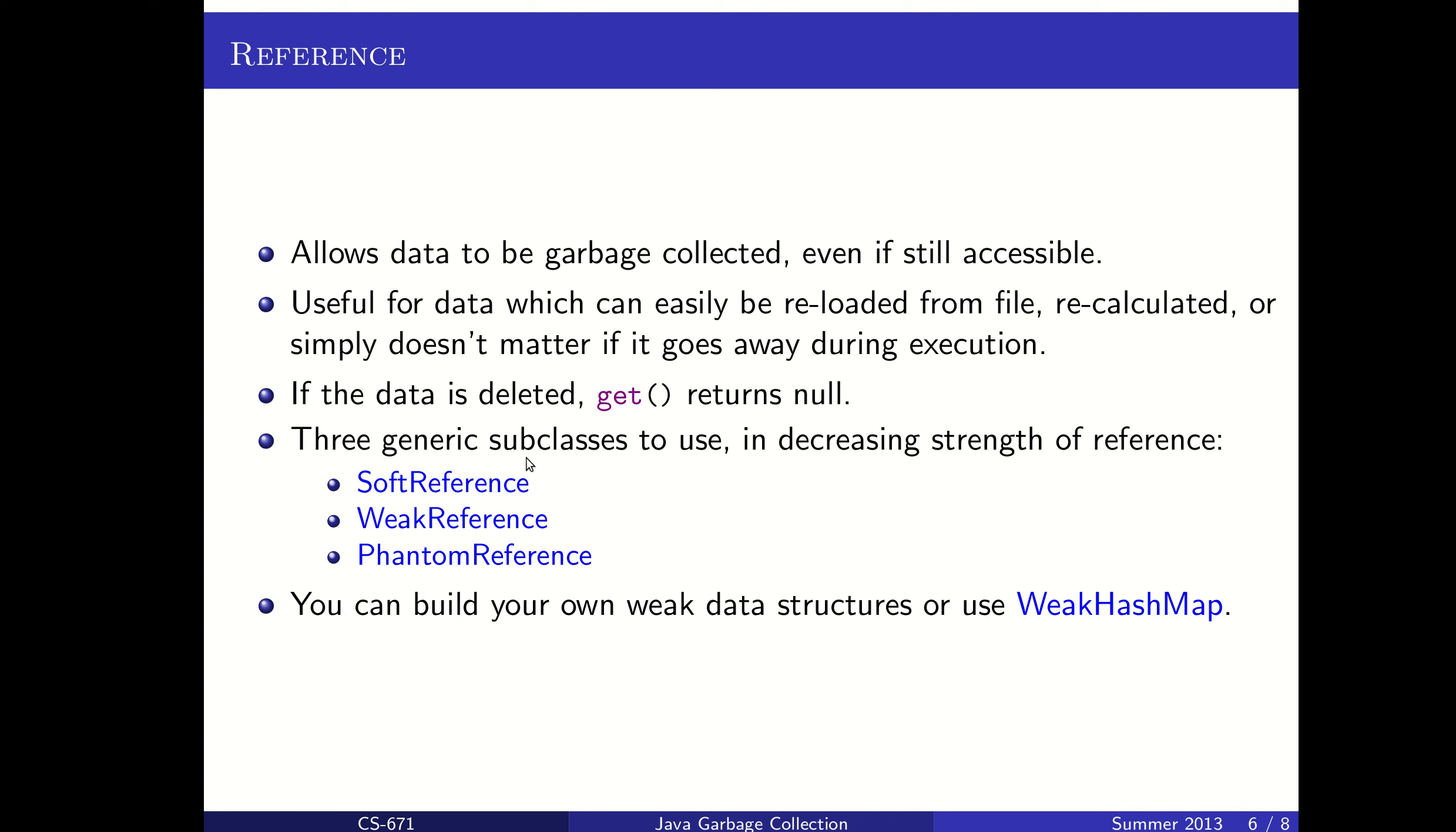There are three generic subclasses that you can use. They are in decreasing strength of reference. I will not get into the exact details of how those are prioritized and things like that but there is soft reference, weak reference, and phantom reference which is the weakest of these references. It will be let go of the easiest by the garbage collector. You can build your own weak data structures so you could create a binary search tree that's willing to let go of its nodes if memory needs cleared out or you can use some built-in weak data structures like a weak hash map.